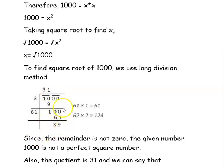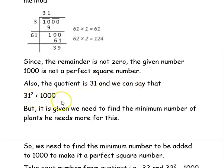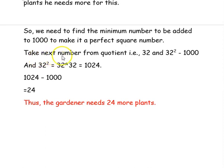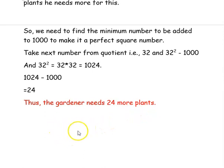Since the remainder is not 0 and there are no numbers left under the bar, we conclude that 1000 is not a perfect square number. The quotient is 31, and 31 squared is less than 1000. We need to find the minimum number to be added to 1000 to make it a perfect square. We take the next number from the quotient, which is 32, and compute 32 squared minus 1000. Since 32 squared equals 1024, we get 1024 minus 1000 equals 24. Thus the gardener needs 24 more plants so that the number of rows equals the number of columns.